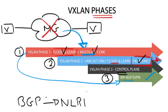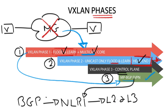A new EVPN NLRI is added to multi-protocol BGP to carry both layer 2 MAC and layer 3 IP information. Now we have the VXLAN data plane along with the BGP EVPN control plane. The data plane is used to transport the packets, and the control plane discovers and distributes endpoint reachability information, including VTAP, VNI, IP and MAC addresses, to interested VTAPs.